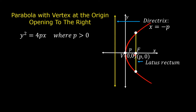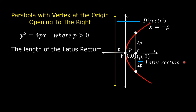The distance of the focus from the vertex is p. The distance of the directrix from the vertex is also p. The distance of the focus from one of the endpoints of the Latus Rectum is 2p. This is also 2p. The length of the Latus Rectum is equal to the absolute value of the sum of 2p and 2p, or the absolute value of 4 times p. So, the length of the Latus Rectum is equal to the absolute value of 4p.